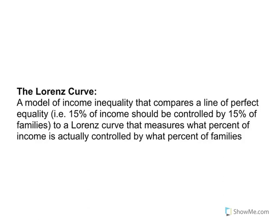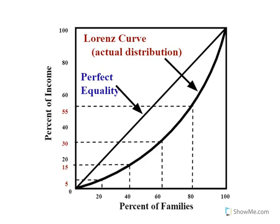The Lorenz curve is a model of income inequality that compares a line of perfect equality — where 50% of income should be controlled by 50% of the population or families — to a Lorenz curve that measures what percent of income is actually controlled by what percent of families.